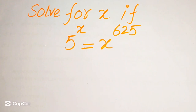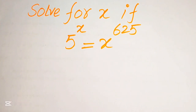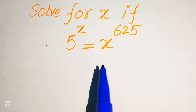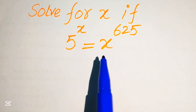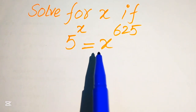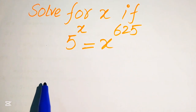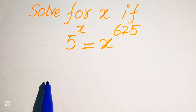Hello everyone, welcome. Here we have 5 to the power of x equals x to the power of 625, and we solve this problem for the values of x.